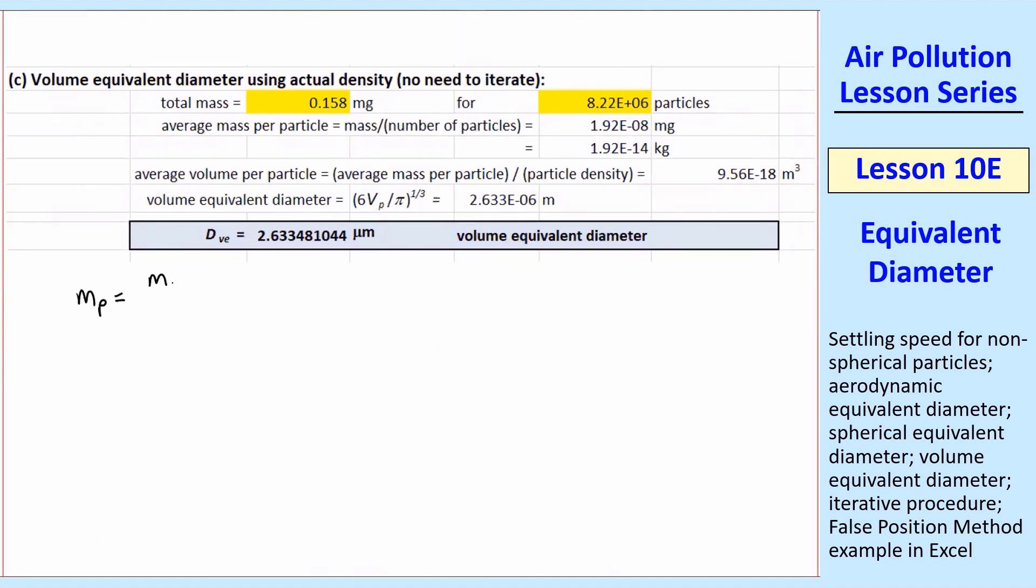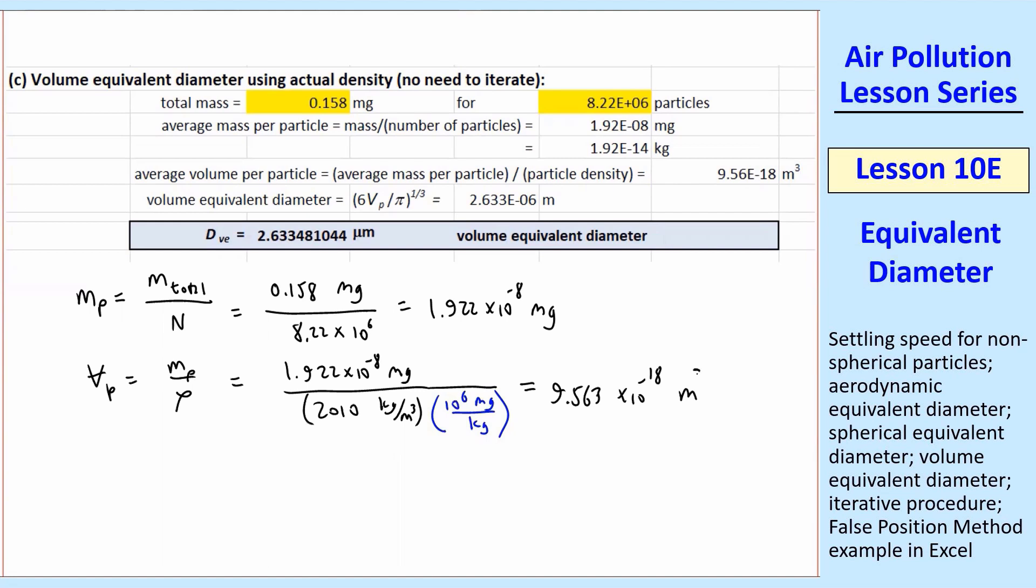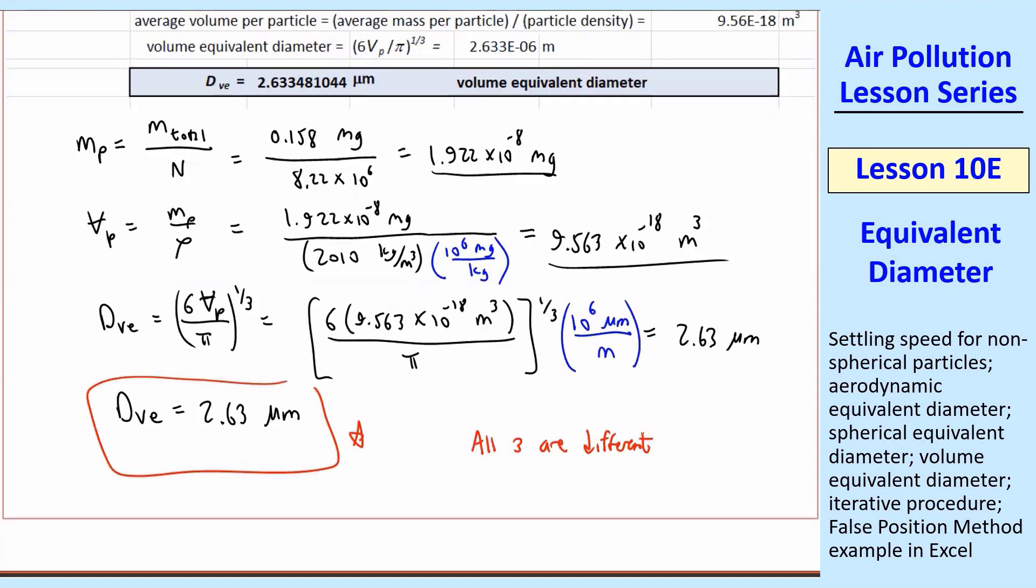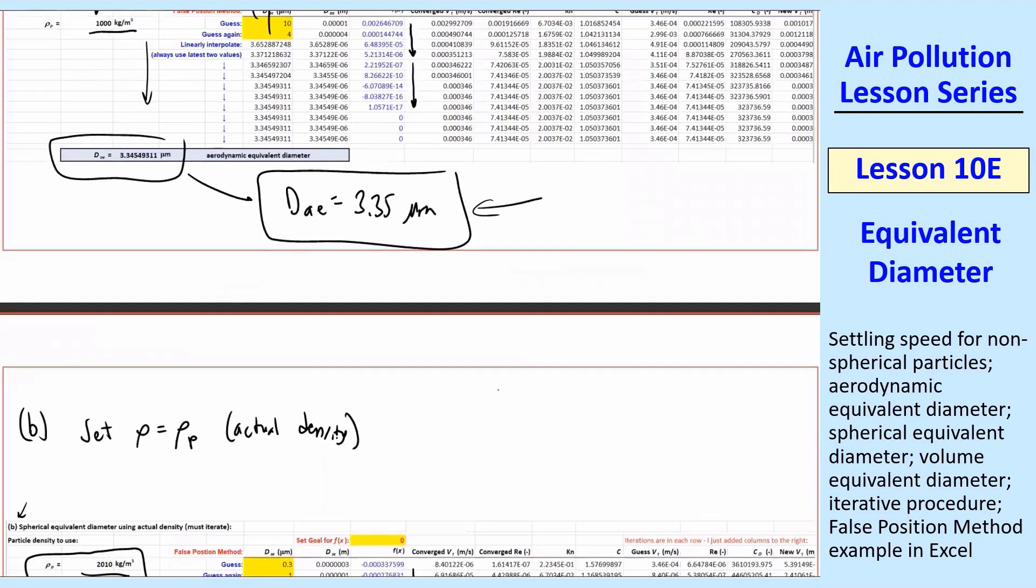Finally, the easiest one. This one's kind of trivial. Using those equations that I gave you, the mass of one particle on average is m total over n. Using the numbers here, 0.158 milligrams over 8.22 million particles, I get 1.922×10⁻⁸ milligram. That's the mass of one particle. The volume of this one particle is then mₚ over ρ. I use the actual density of the particle, one unit conversion factor there on the denominator. And this gives me 9.563×10⁻¹⁸ meter cubed. 10⁻¹⁸ is really tiny, but this is in meter cubed, so that is correct. And then I use my equation for dᵥₑ based on the volume of the sphere. Plug in my particle volume from here, divide by π, raised to the one-third power, and then get my units correct by 10⁶ microns per meter. And I get 2.63 microns. And again, all three are different. We have 2.63 for dᵥₑ, we had 2.33 for dₛₑ, and we had 3.35 for dₐₑ.